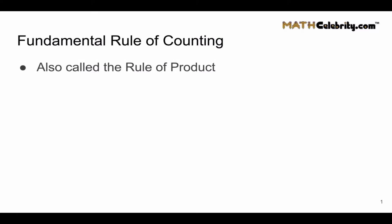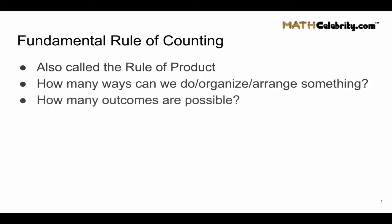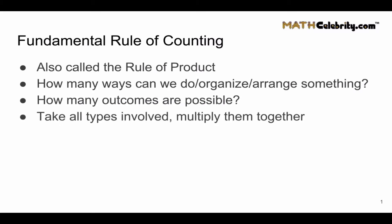They also call this a rule of product, and for good reason, because you're going to find how many ways you can do, organize, or arrange something. In other words, how many outcomes are possible? They get the name rule of product because you're going to take all the types involved and multiply them together to get your answer.